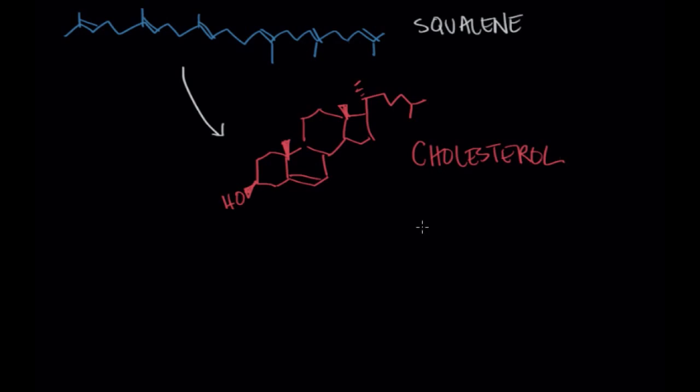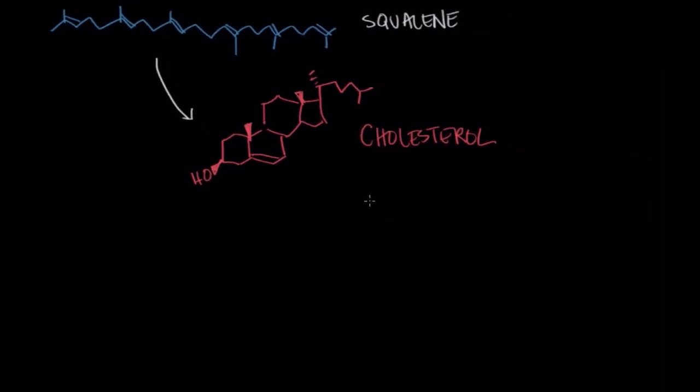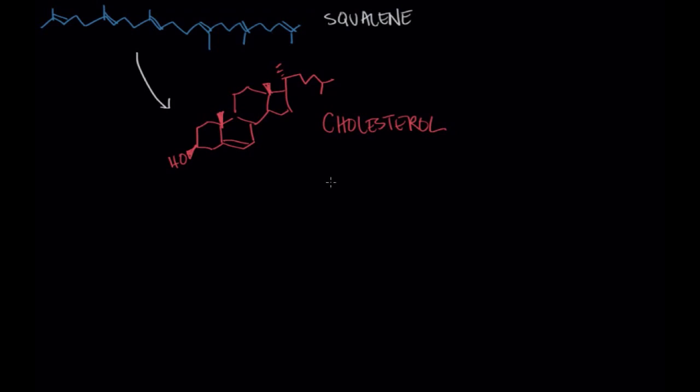And cholesterol travels through our blood and it lives in the inside of cells and on their surfaces. And in the case of endocrine organs that use steroid hormones to communicate, cholesterol can actually be altered to form the very characteristic steroid backbone.